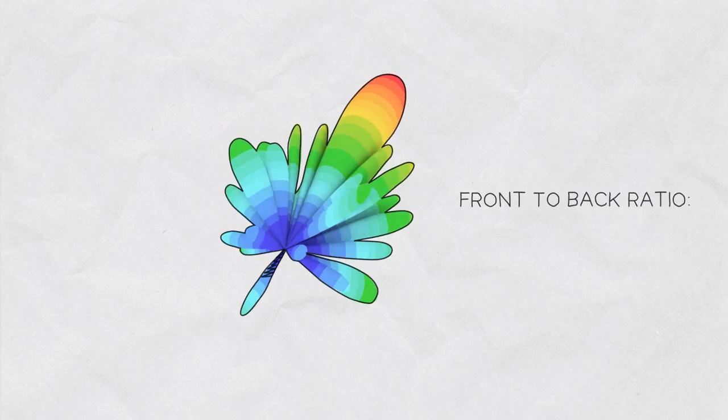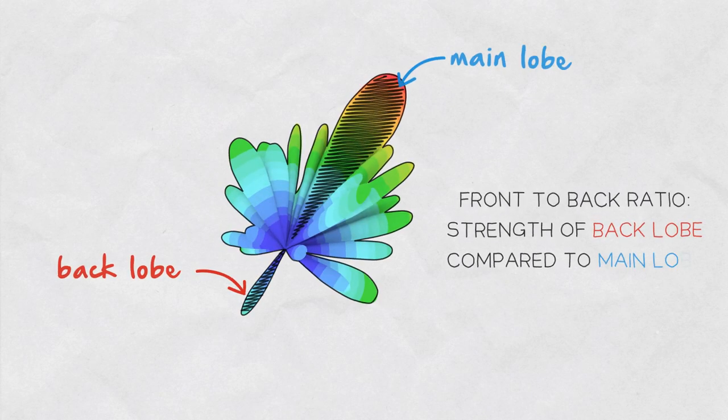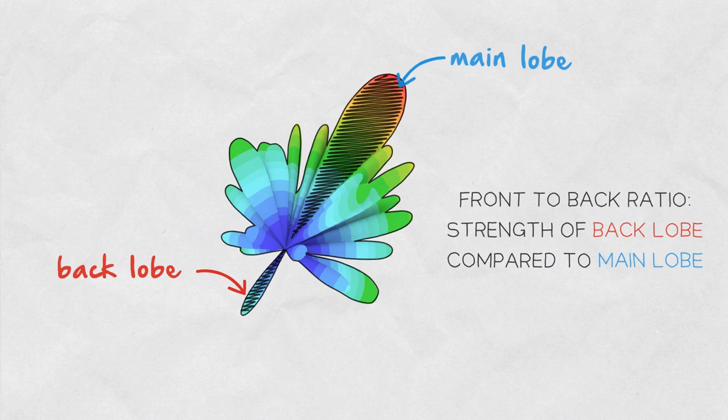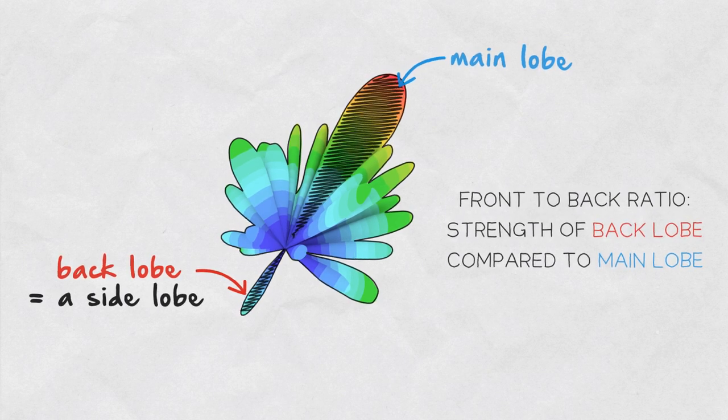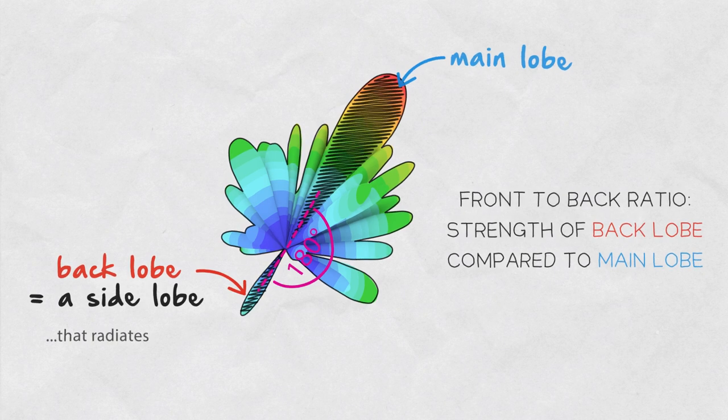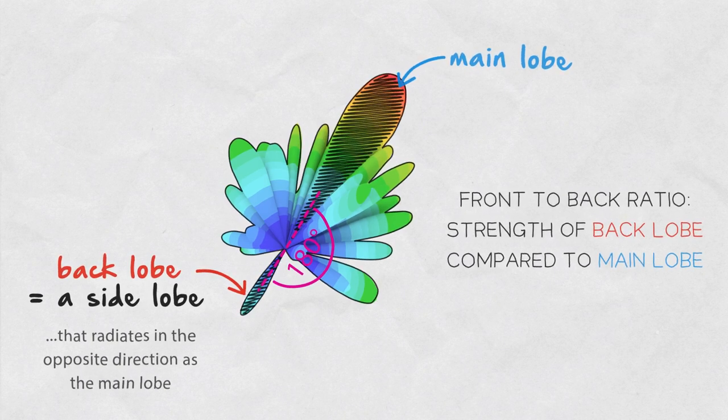Front-to-back ratio says how strong the back lobe is compared to the main lobe. Even though the back lobe, as well as any other radiation outside the main lobe, is considered a side lobe, it got a specific name because it radiates precisely in the opposite direction as the main lobe.